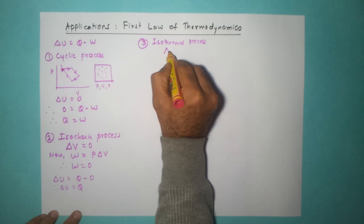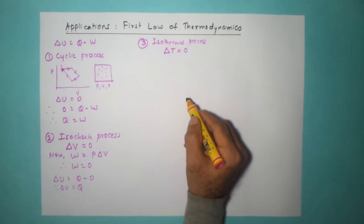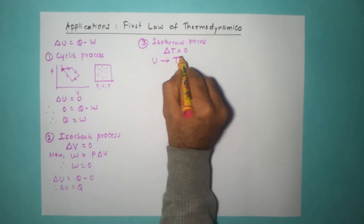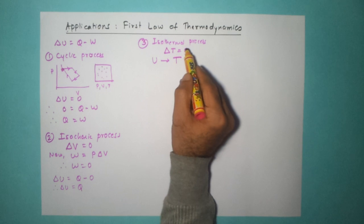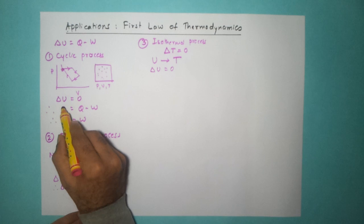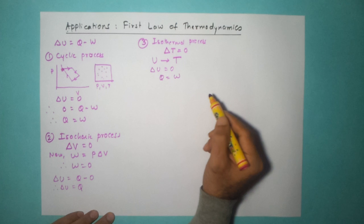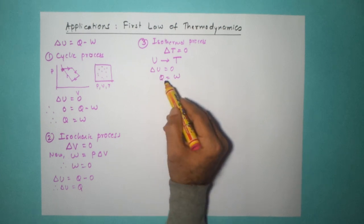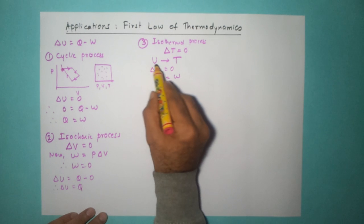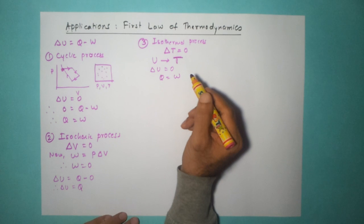The third process is the isothermal process, where the change in temperature is zero. For an ideal gas, internal energy U depends on temperature. So if there is no change in temperature, delta U equals zero. Again we have delta U equal to zero, therefore Q equals W — the entire amount of heat is being used for doing work. This is what happens for an ideal gas when temperature does not change at all.